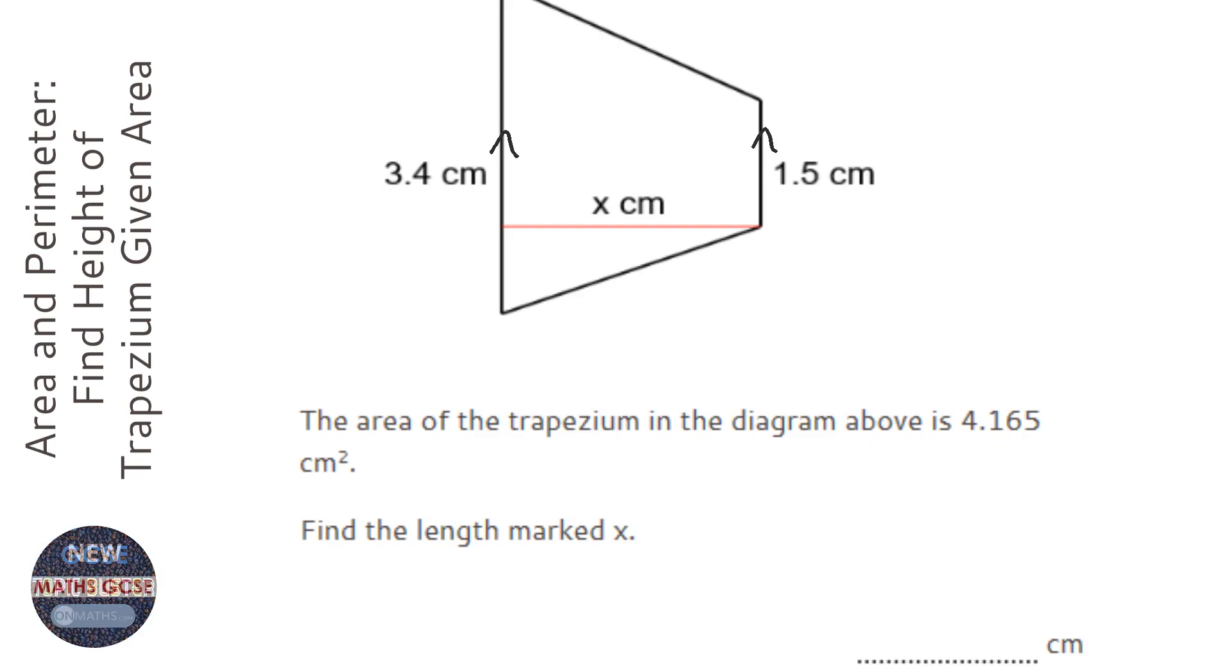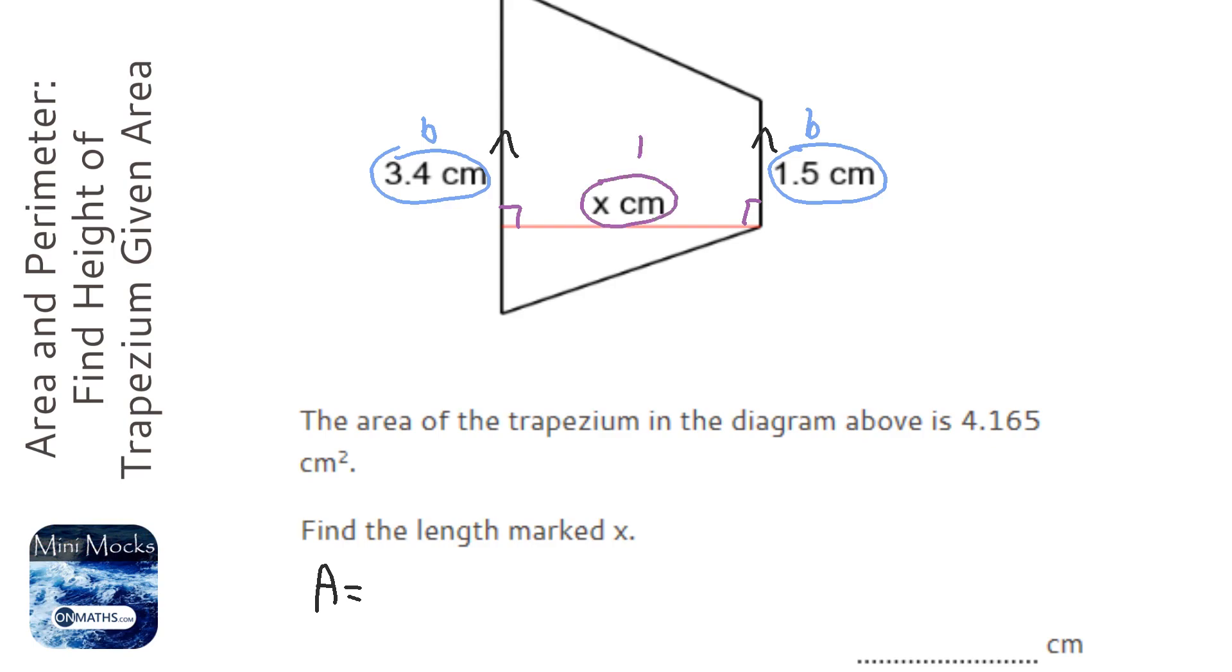The formula for a trapezium is we look at both of the bases, which are these ones here. We know they're the bases because they're the ones on the parallel sides, and we add them together to halve it, and then times by the height. Now the height hits both of the bases at 90 degrees, so this is our height here.